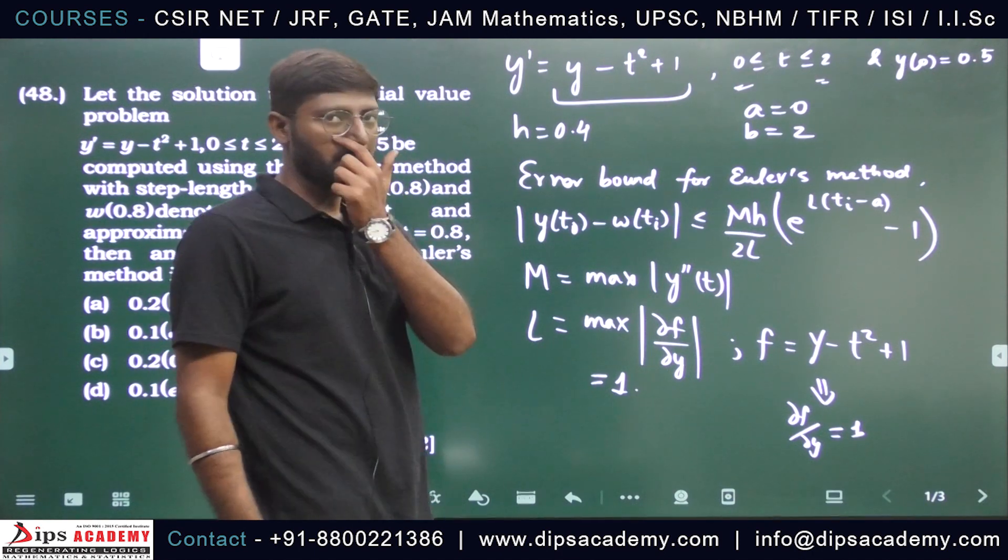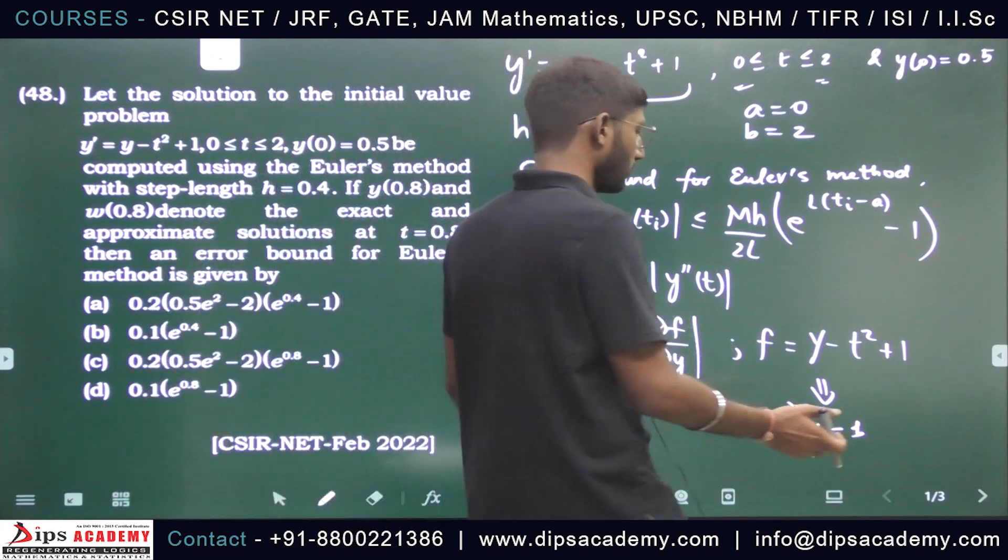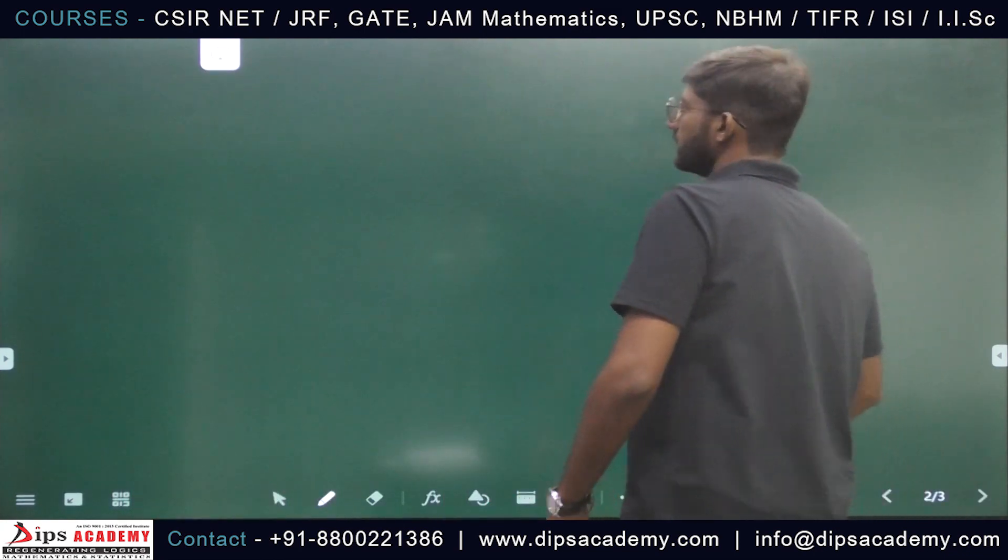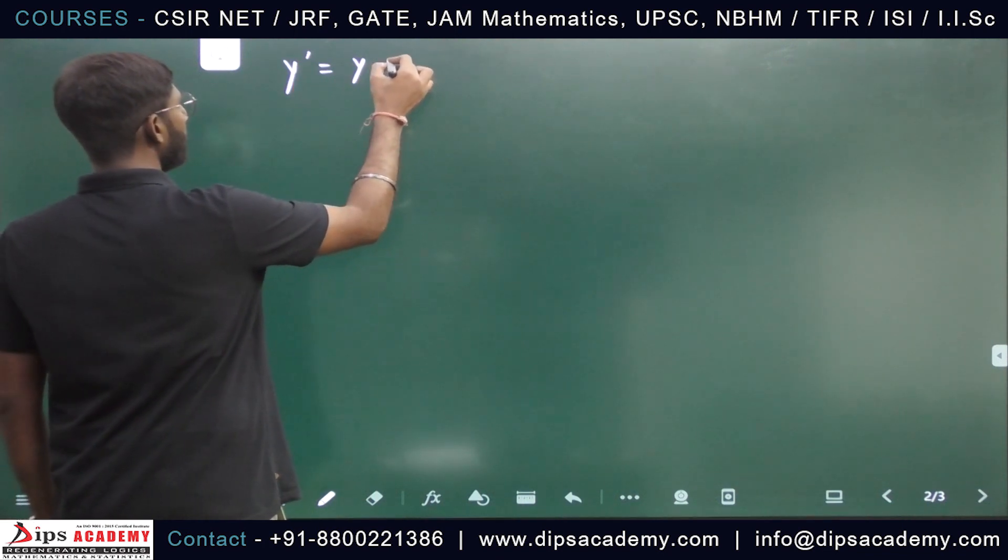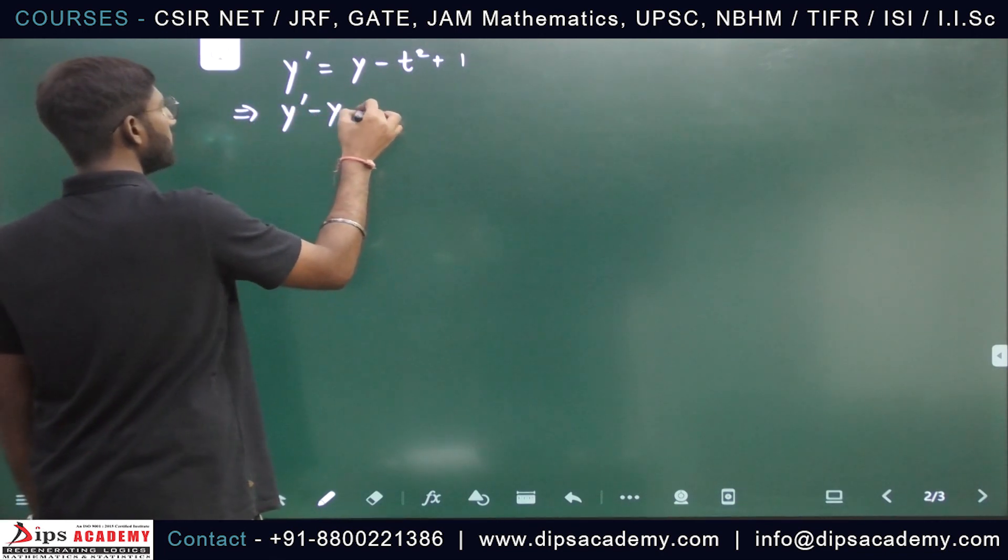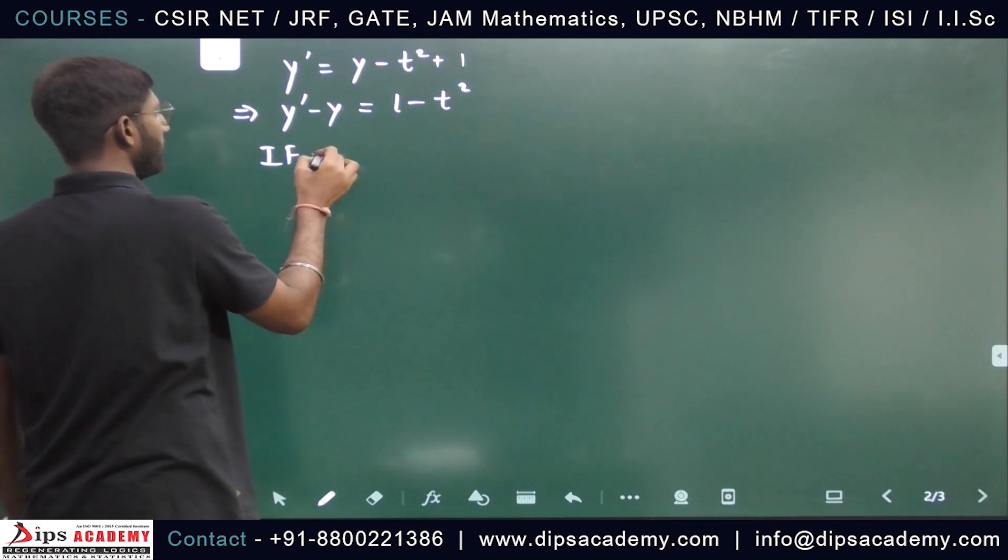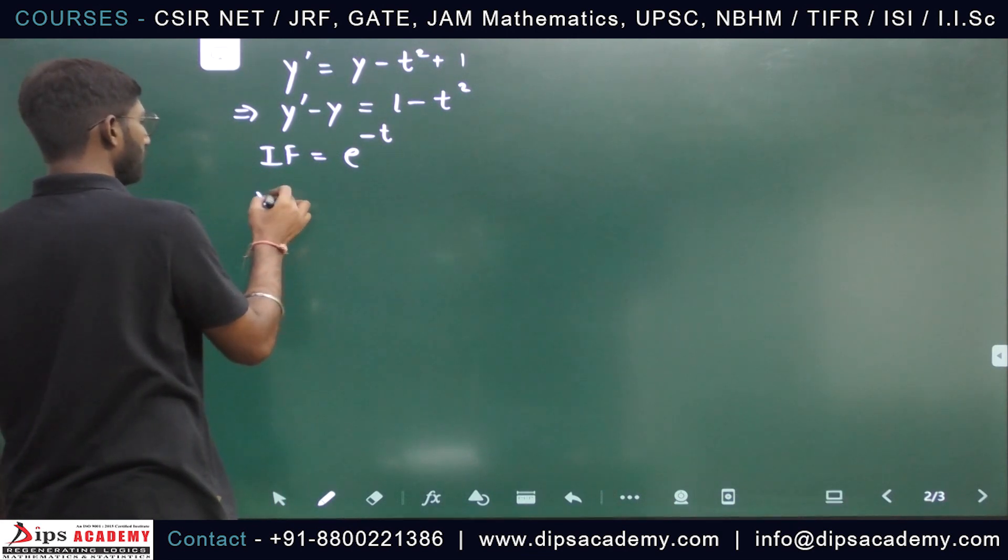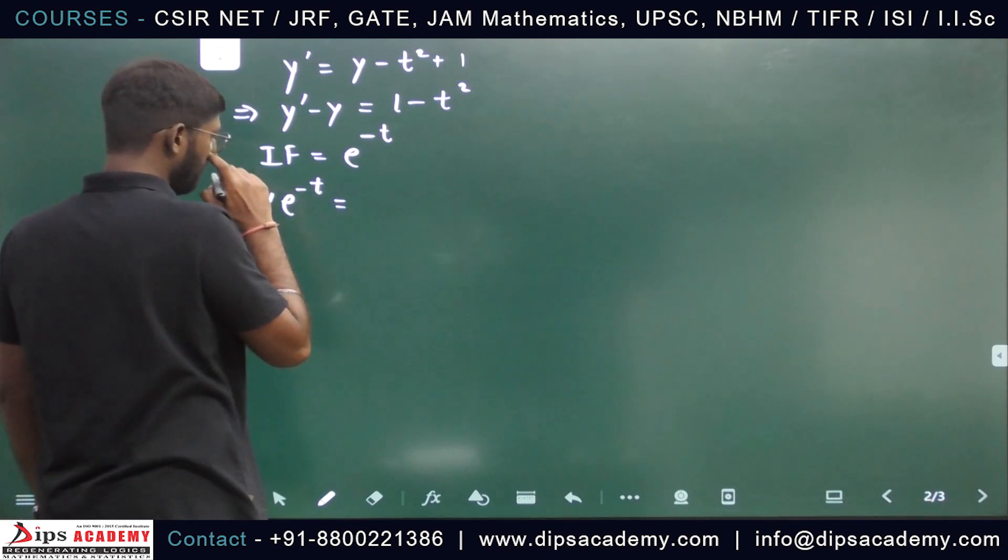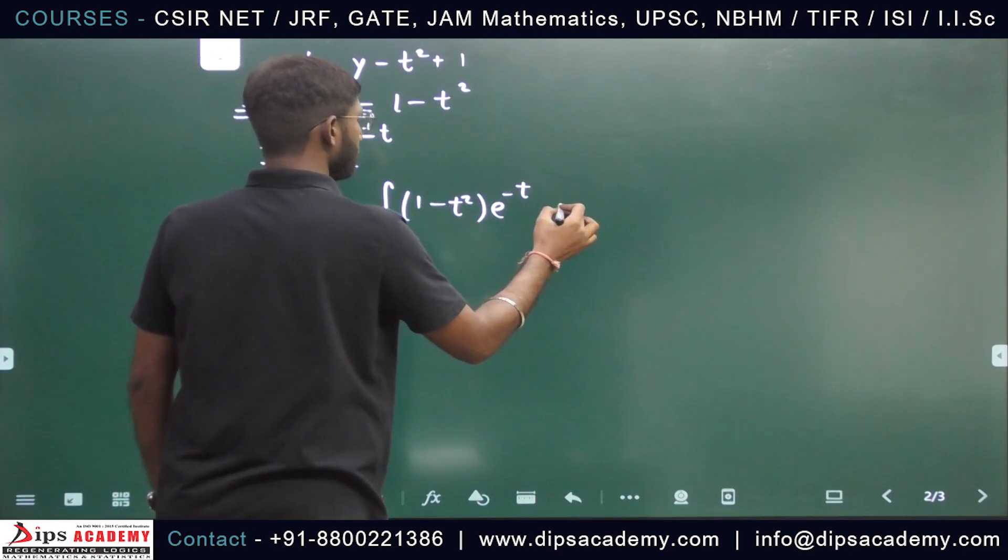Let's talk about m. You need the exact solution because m is maximum of y double dash. So y dash equals y minus t squared plus 1. As you can see, this is linear in nature. Integrating factor will be e^(-t), and then solution will be y*e^(-t) equals integral of (1 - t^2)*e^(-t) + c.